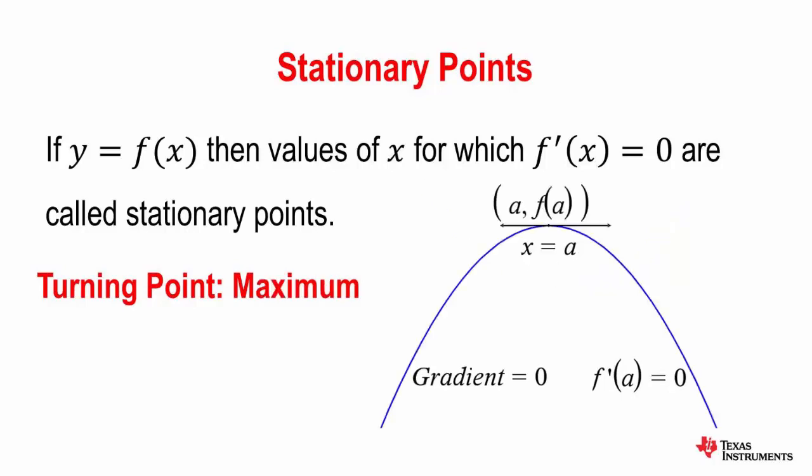We can also have a maximum turning point which again occurs when the gradient is zero, however this one slightly to the left of the maximum turning point the gradient is positive, but to the right the gradient is negative. So this one is basically like the top of the hill.